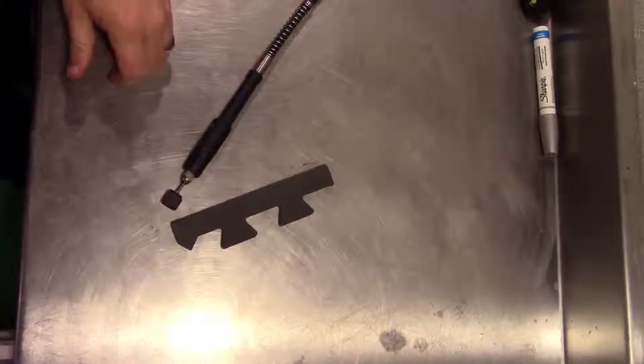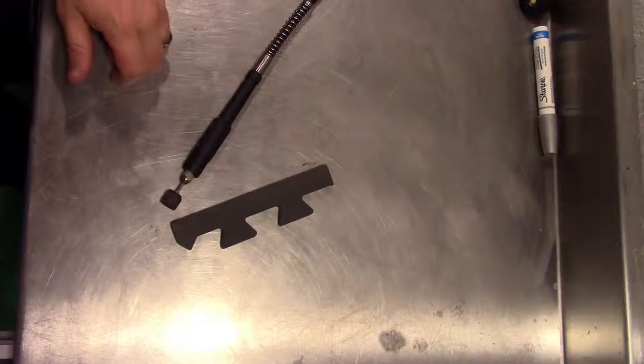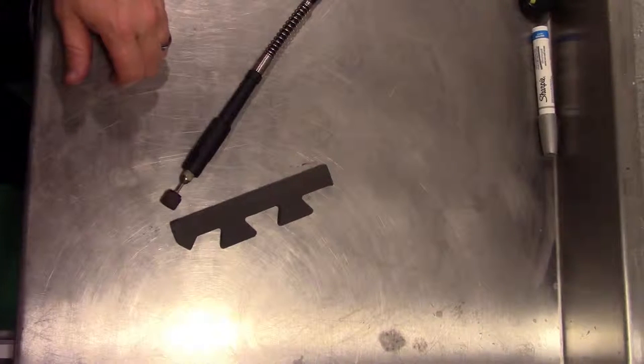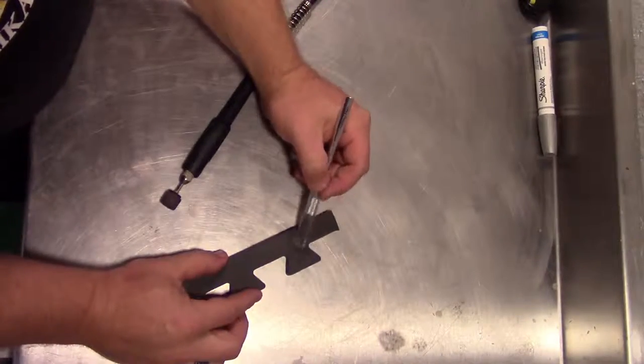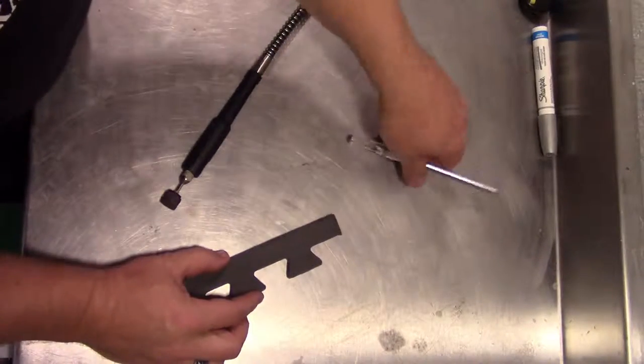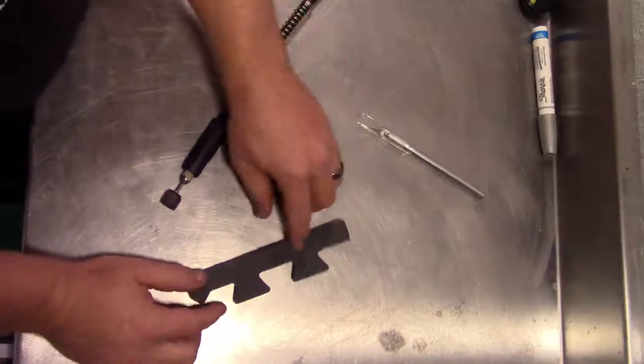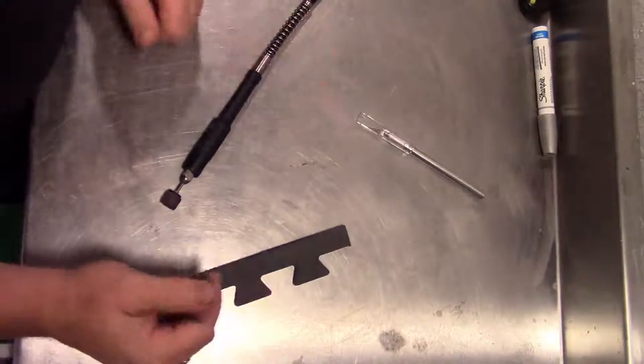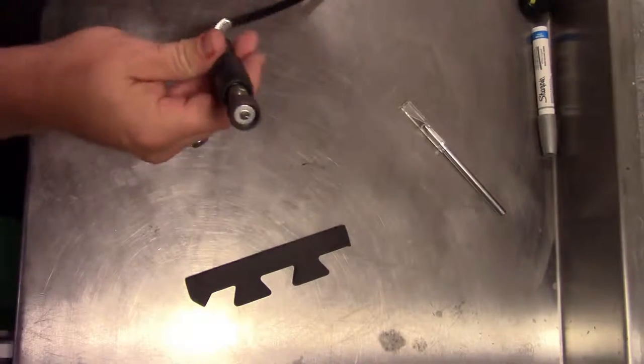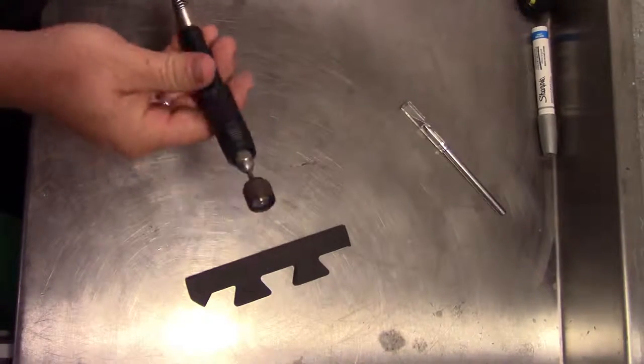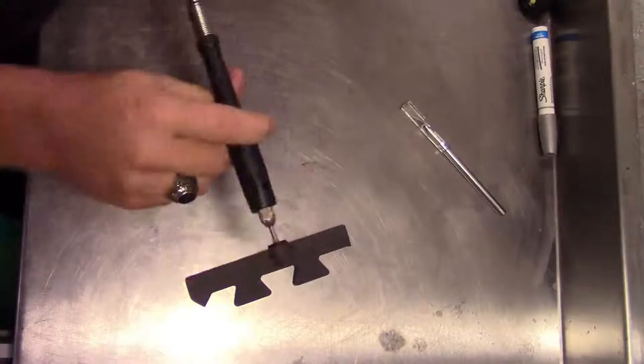Then we're going to take our exacto knife, which is hidden in my drawer somewhere. Here we go. And we're going to make a cross section in it. We'll hit it with our heat gun. It will open that up and we'll have the appearance of a screw hole. So to get started, we're going to fire up our Dremel tool or rotary tool of your choice, and we're going to make our circle.